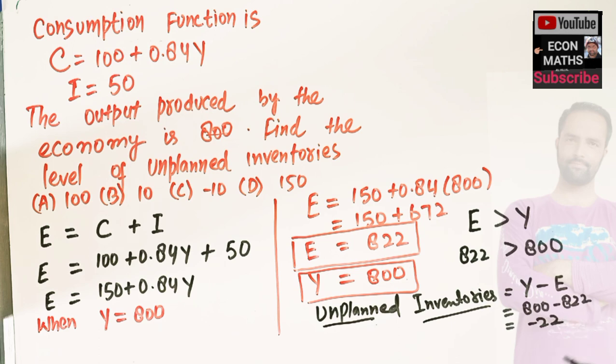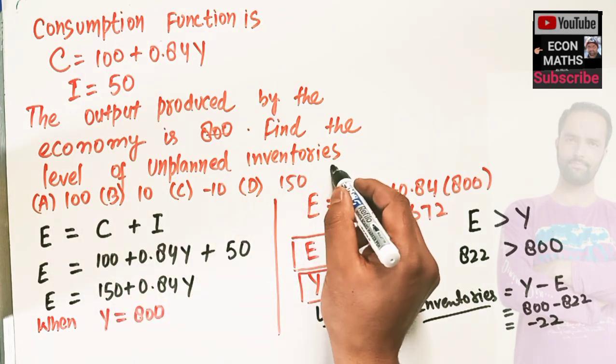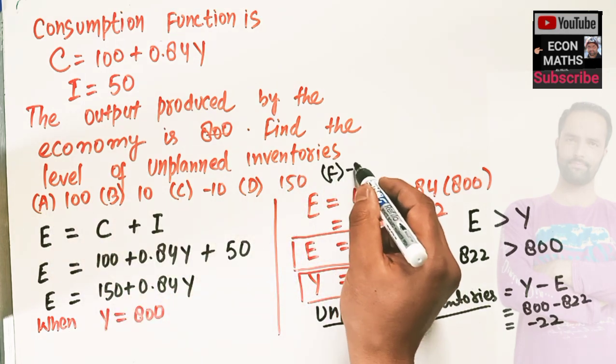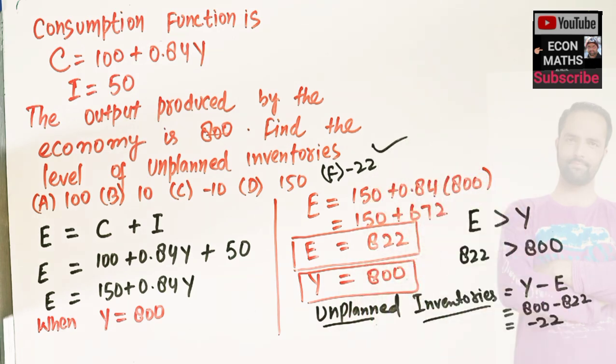Or $22. I hope I make myself clear in this video. So none of the options is correct. Let us say option E is negative 22. That will be the correct option. Thank you.